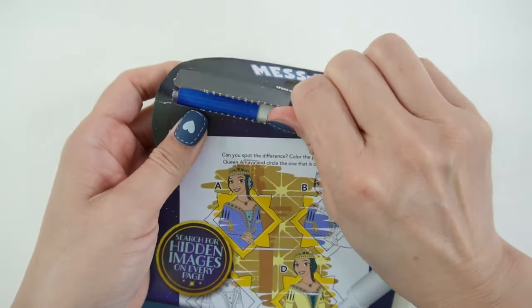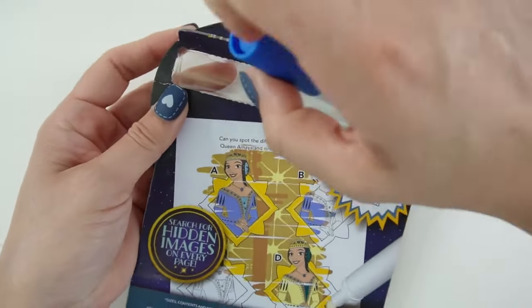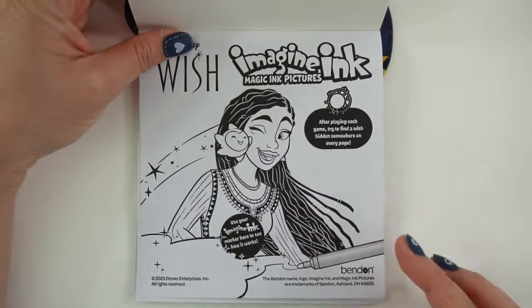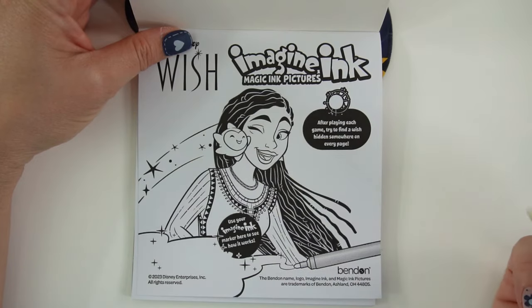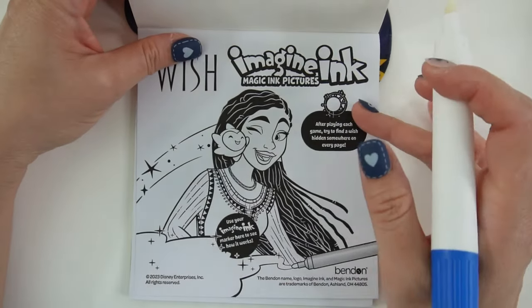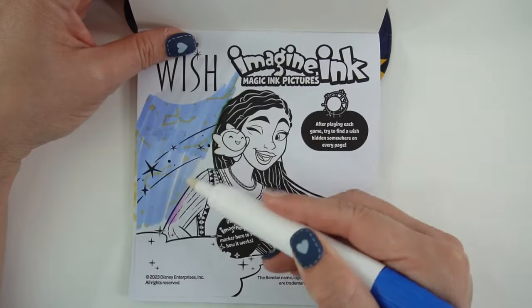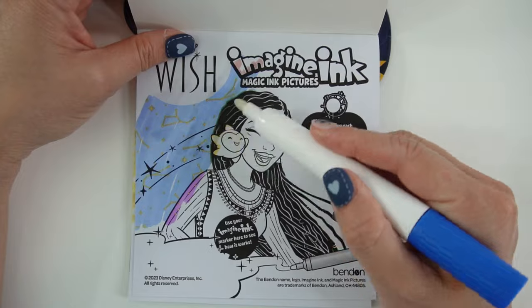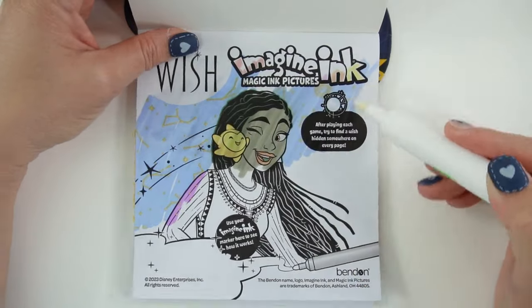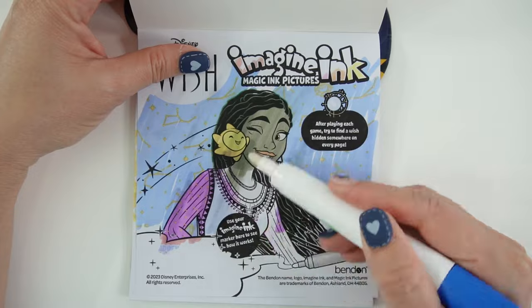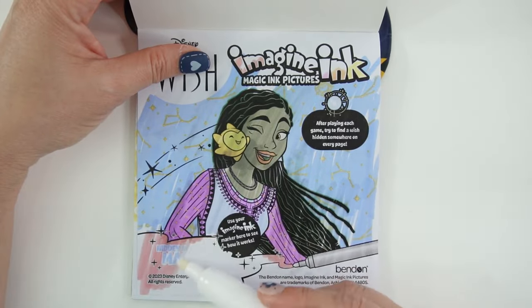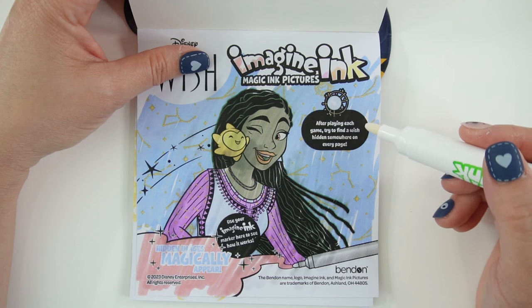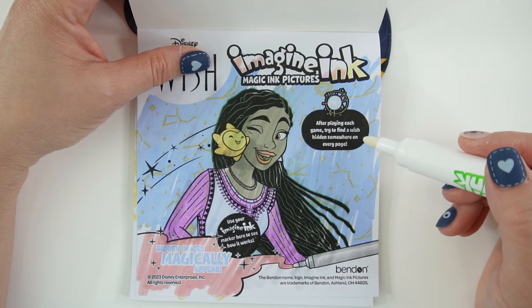Go ahead and pop out this marker here. Take a look, this marker looks clear. All right, so here's the first page. Here is Asha and a star. Let's color them in. Oh look, the constellations appeared in the background. There's her picture. And it says, after playing each game, try to find a wish hidden somewhere on every page.